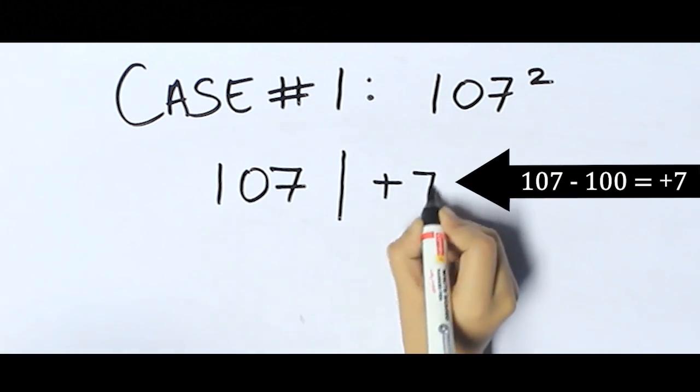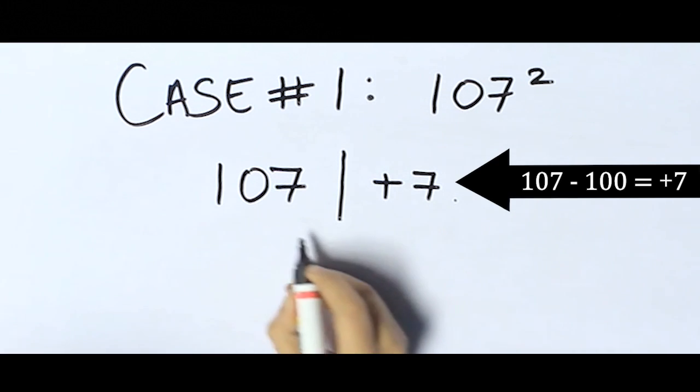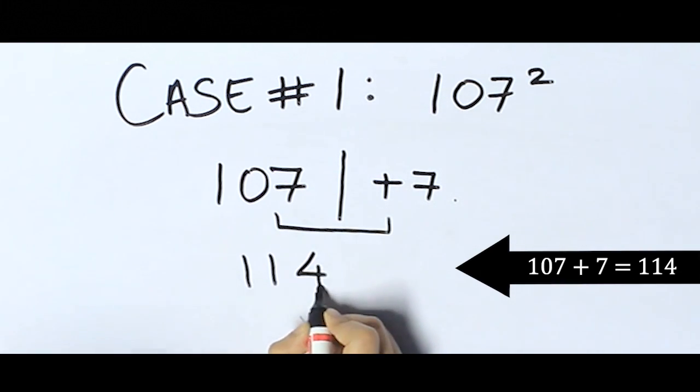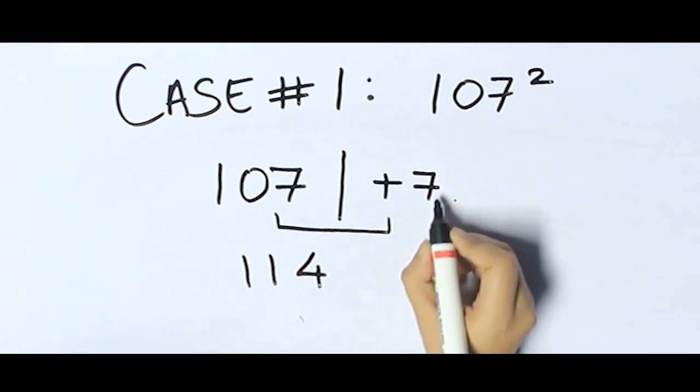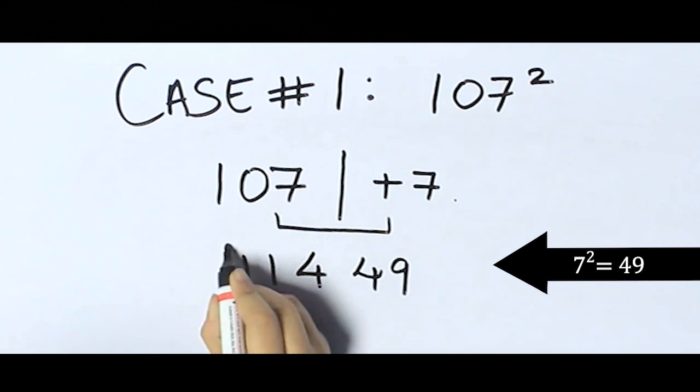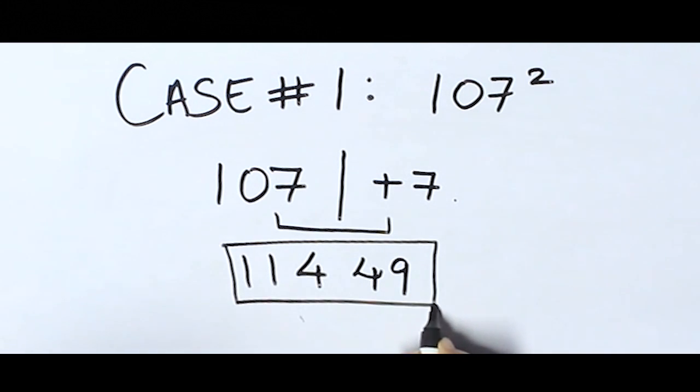Now add these two numbers. We'll get 114, and simply write the square of 7, that is 49, in front of this. The resultant number—11,449—is nothing but the square of 107.